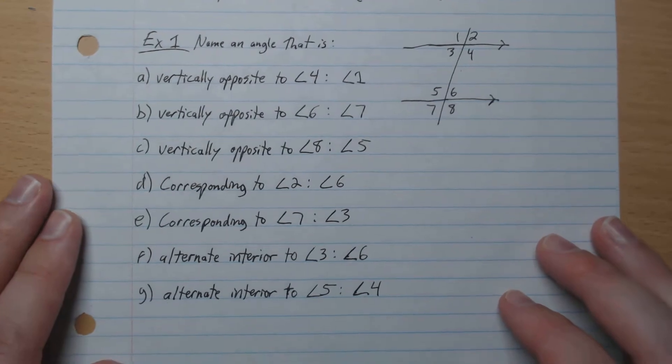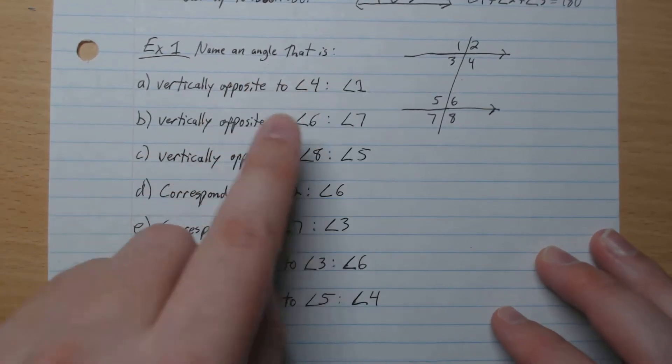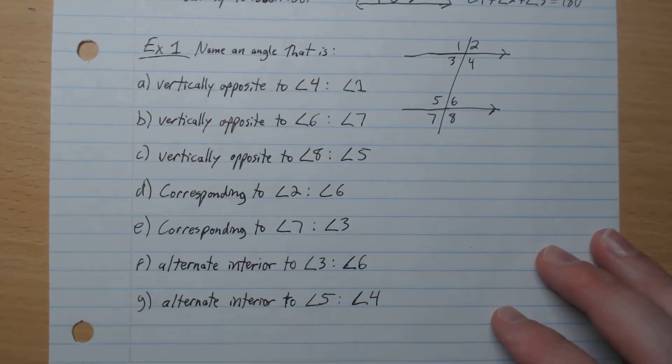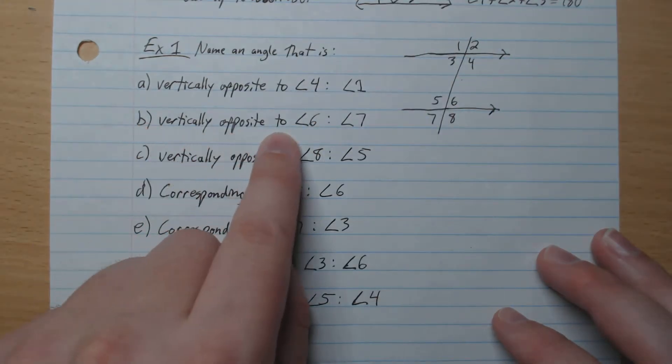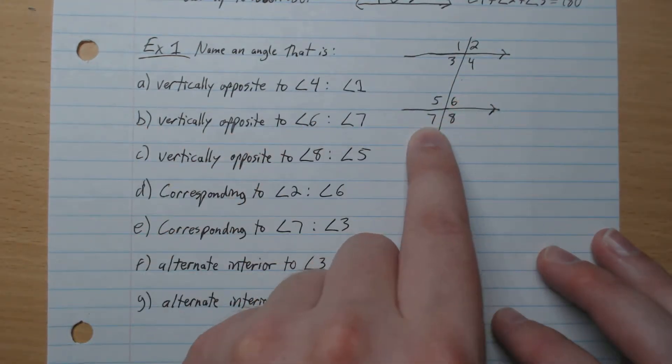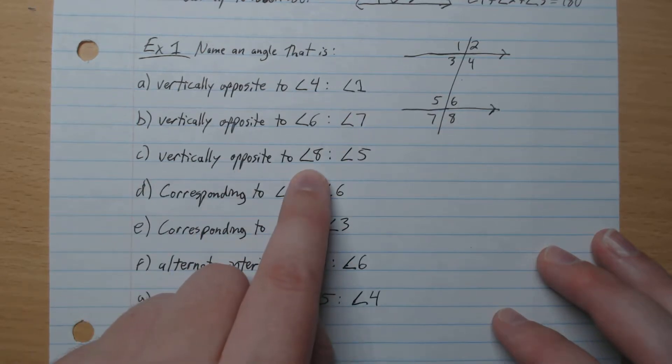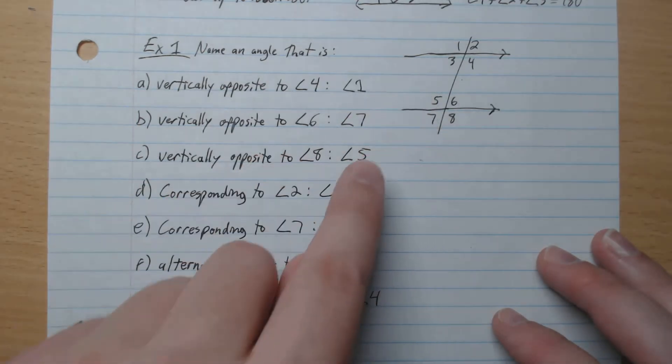Let's do some examples. Name an angle that is vertically opposite to 4. Opposite to 4 is 1. Opposite to 6 is 7. Opposite to 8 is 5.